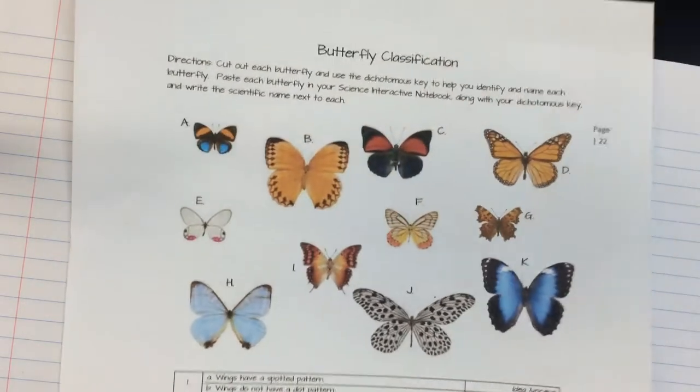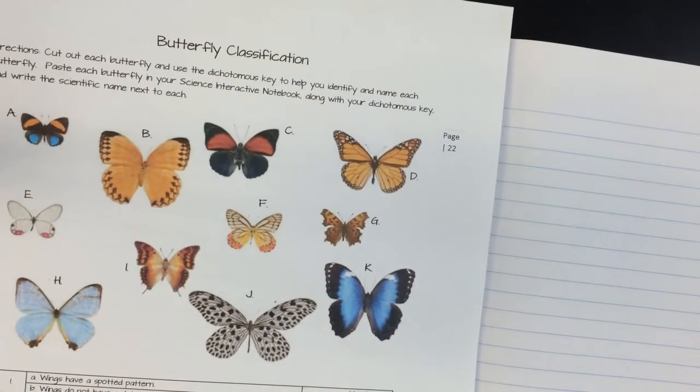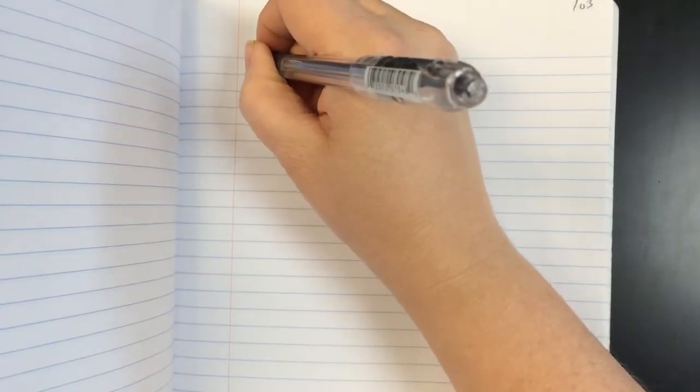Hi everyone, this is Ms. Segovia and I'm going to walk you through your notes on classification. I'd like you to put classification in the page that's opposite your butterflies. So butterflies are going to end up on the left over here and then classification notes on the right. Let's go ahead and set up for Cornell notes.